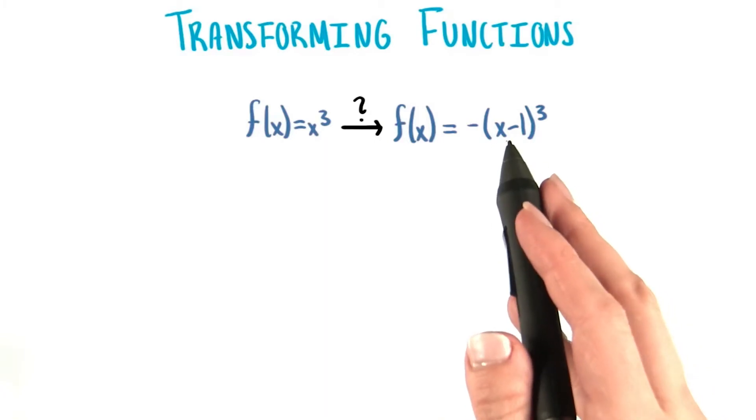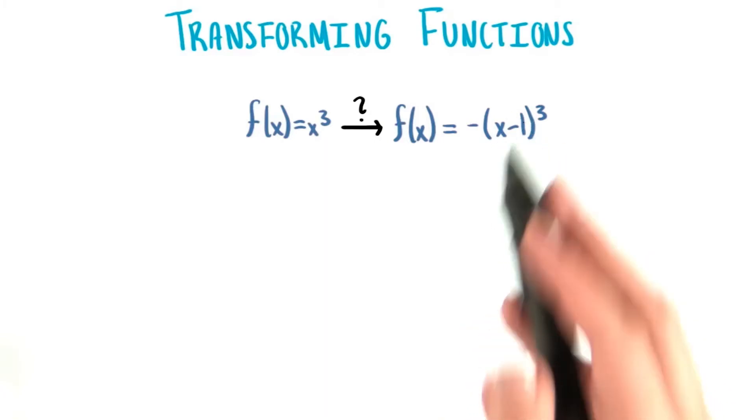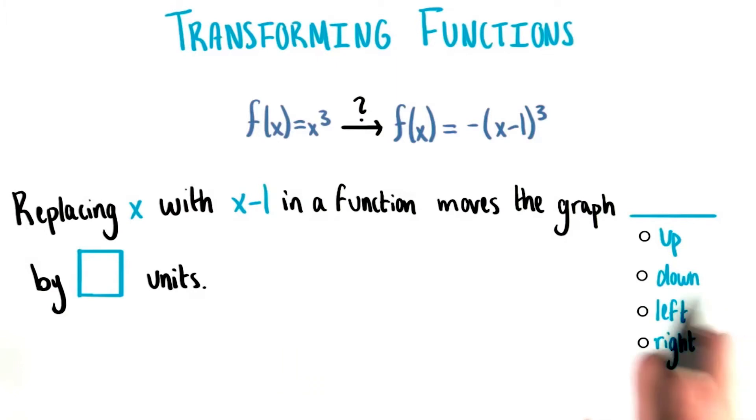So first things first, what is the minus 1 right here doing? Please fill in this sentence properly to tell me about this transformation. Which direction does this replacement shift the graph, and by how many units?